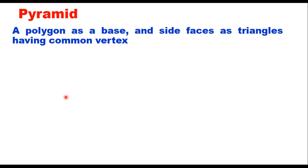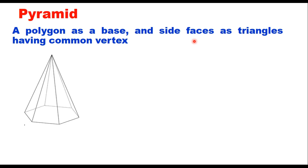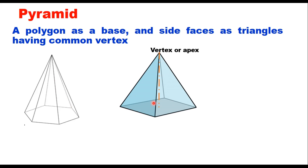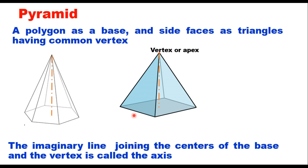A pyramid has a polygon as its base and triangular side faces. For example, a hexagonal pyramid has a regular hexagon at the base and six isosceles triangles as side faces. Similarly, a square pyramid has a square base and four isosceles triangles. The top point is called the apex or vertex, and the line joining this vertex with the center of the base is called the axis of the solid.